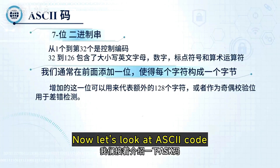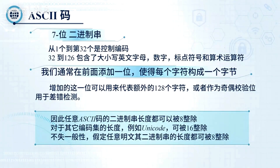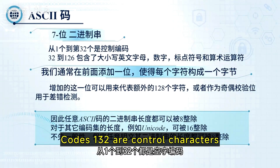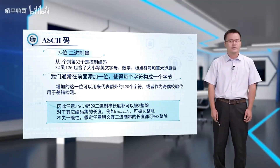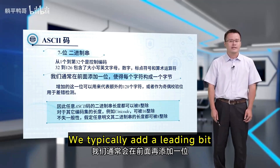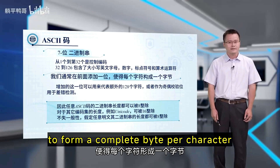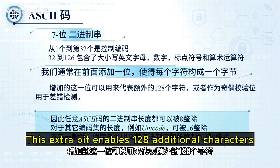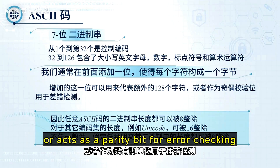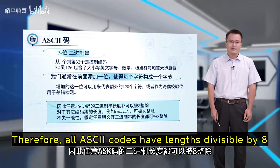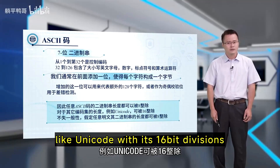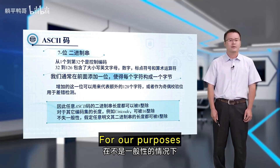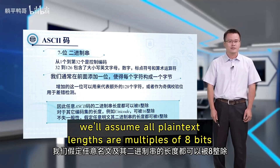Now let's look at ASCII code — a 7-bit binary code. Codes 1 through 32 are control characters. Codes 32 through 126 contain letters, numbers, and symbols. We typically add a leading bit to form a complete byte per character, making it an 8-bit sequence. This extra bit enables 128 additional characters, or can serve as a parity bit for error checking. Therefore, all ASCII codes have lengths divisible by 8. For other encoding systems like Unicode with its 16-bit divisions, we assume all plaintext lengths are multiples of 8 bits.